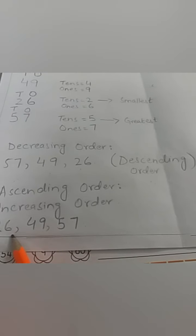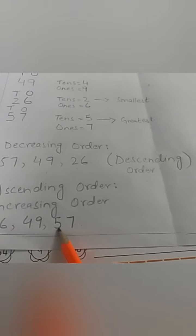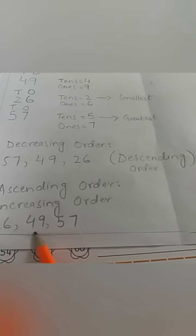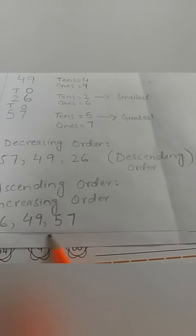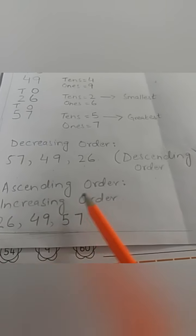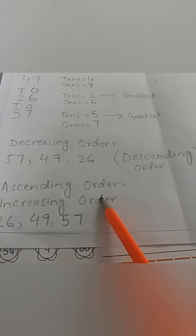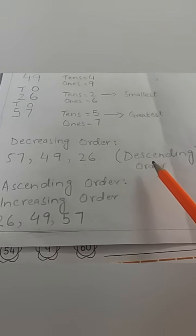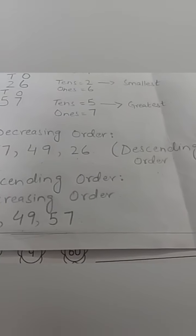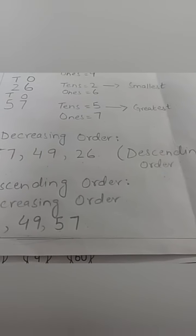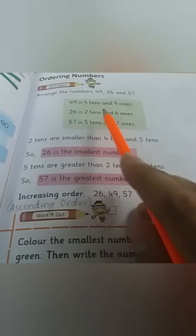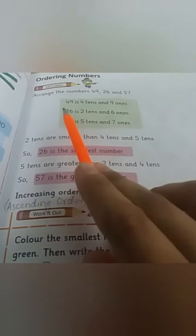Secondly, we can also arrange it starting from the smallest to the biggest number. As we know, 26 is the smallest number, 57 is the greatest number, and 49 comes in between. So we arrange them in increasing order, known as ascending order. And this is descending order, right?